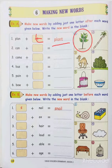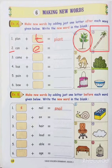Coming to the second one: C, A, N — can. The second picture given here is sugar cane. If we add E here, we get a new word: C, A, N, E — cane.